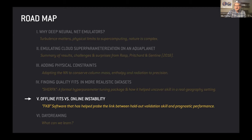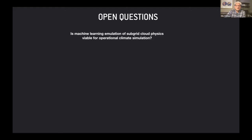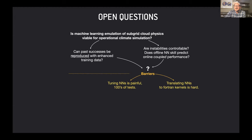I want to talk about the difference between offline fits and online instabilities — a reproducibility crisis. The exciting 2018 results where we got a stable climate and equatorial wave spectrum in an aqua planet using a neural network have been really hard to reproduce even in minor variations. Key questions: Can we reproduce past successes reliably? Are these online instabilities controllable? Does the offline skill even predict online performance? We haven't been able to address many of these questions due to a lack of tools — tuning neural networks is really painful, and translating candidate neural networks into Fortran kernels to plug into a climate model is hard too.